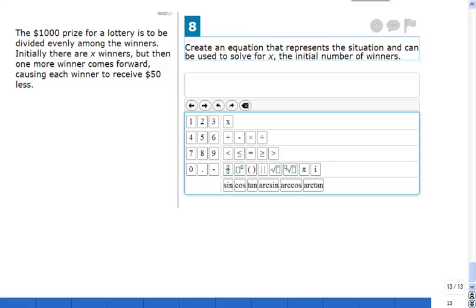Nevada Virtual Academy, welcome back. Let's do one more problem. The $1,000 prize for a lottery is to be divided evenly among the winners. Initially there are X winners but then one more winner comes forward, surprise surprise, causing each winner to receive $50 less. Imagine how happy those guys are. Create an equation that represents the situation and can be used to solve for X, the initial number of winners.